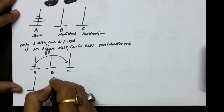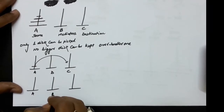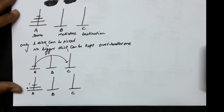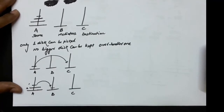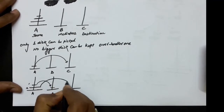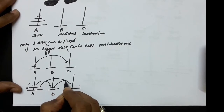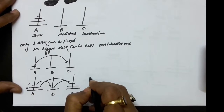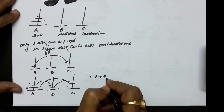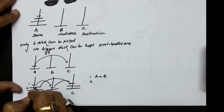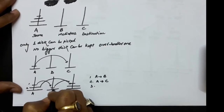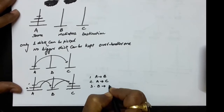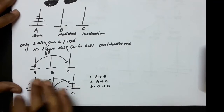Now suppose we have two disks, numbered 1 and 2. To transfer these disks, the smaller disk (disk 1) can be kept in the mediator, that is B. Then disk 2 can be transferred to the destination C. And then finally, the disk which was kept in the mediator is shifted back to C. So: first we shifted disk 1 from A to B (source to mediator), in the second step we transferred a disk from source to destination, and finally the disk in the mediator (B) is transferred to C.